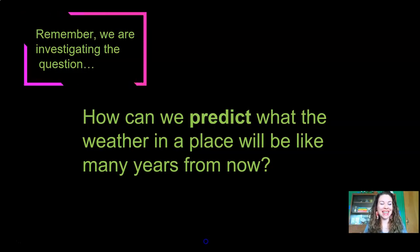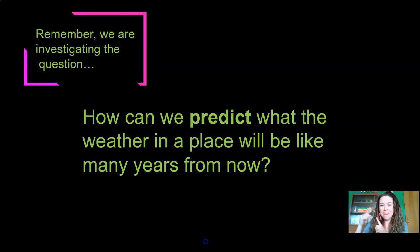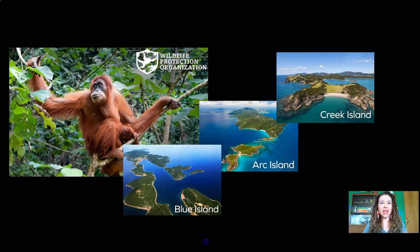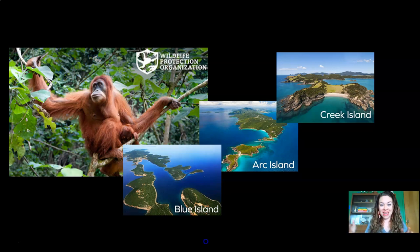All right, welcome back. Remember, we are investigating this question: How can we predict what the weather in a place will be like many years from now? How can we see into the future? We need to know how to do that because we're trying to decide which of these three islands would be the best place for an orangutan reserve. Remember that in chapter one, we looked at one day of data, and we thought we had our mind made up. But then in chapter two, we got a month's worth of data, and we changed our mind. Now we're trying to look at a long-term range of data, so we can make a good decision for the orangutans over many years.